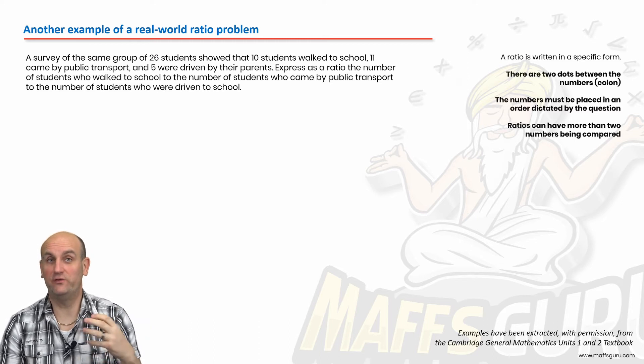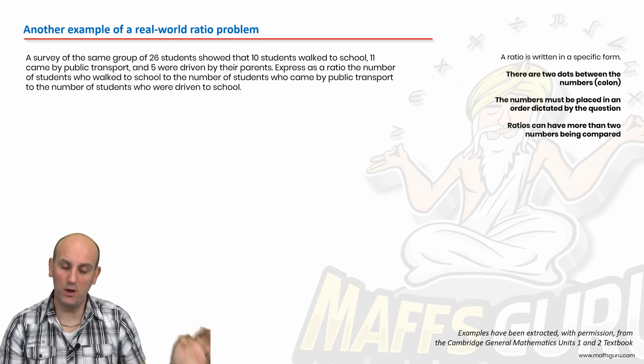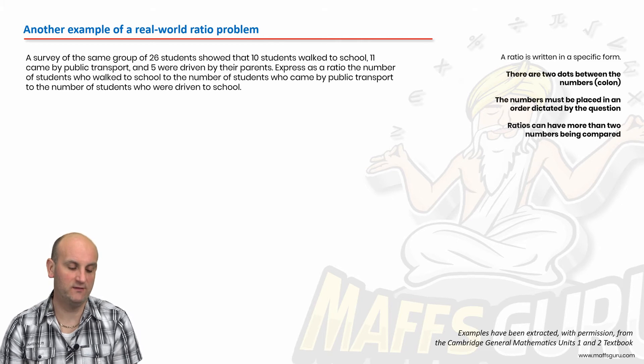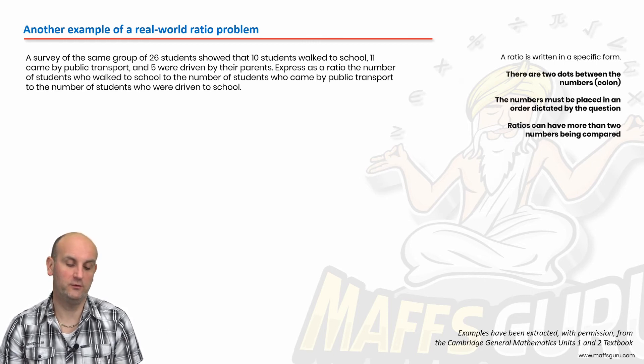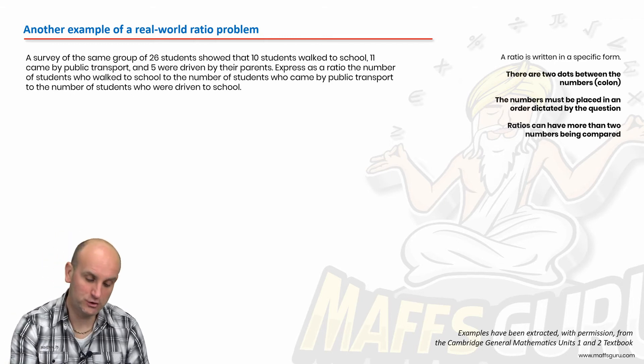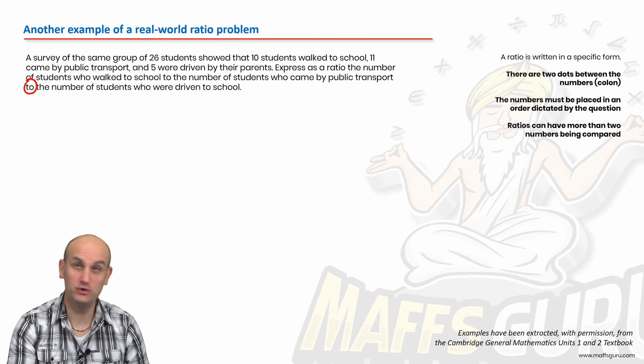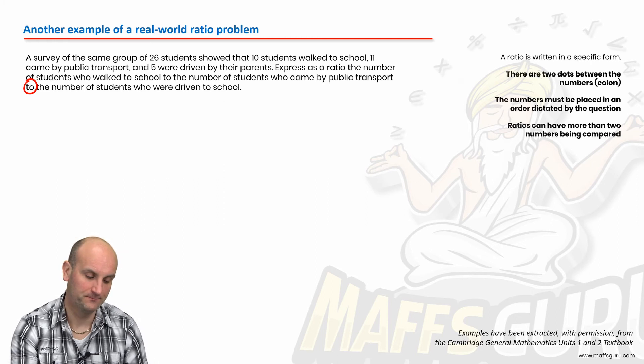As I say, we can write ratios with different numbers. This seems like a long question, doesn't it? But we've just got to pick out the information. A survey of the same group of 26 students showed that 10 students walked to school, 11 came by public transport, and 5 were driven by their parents. Express as a ratio the number of students who walked to school to the number of students who came by public transport to the number of students who were driven to school. Every time I see the word 'to', I know that I'm going to write two dots.